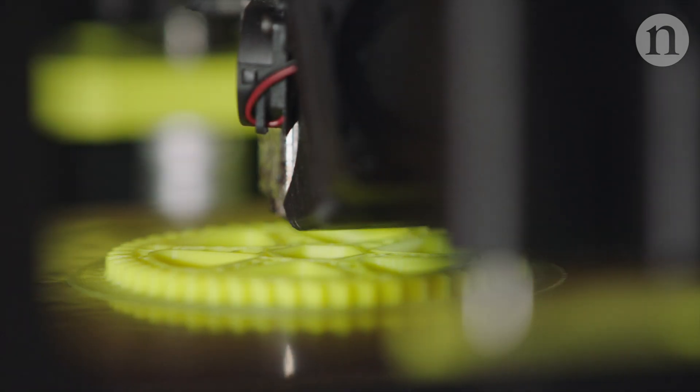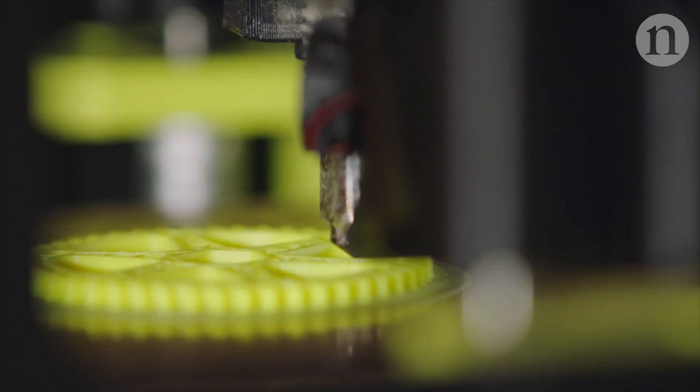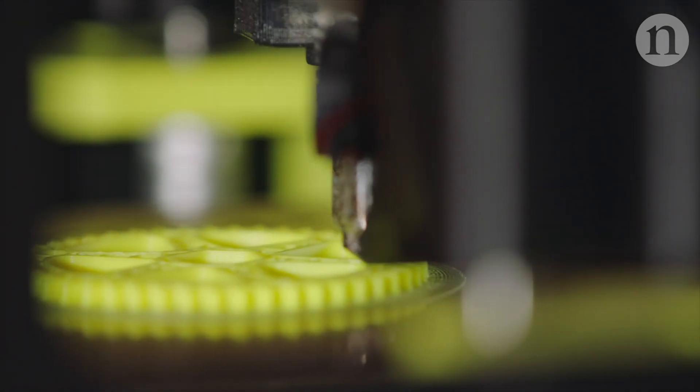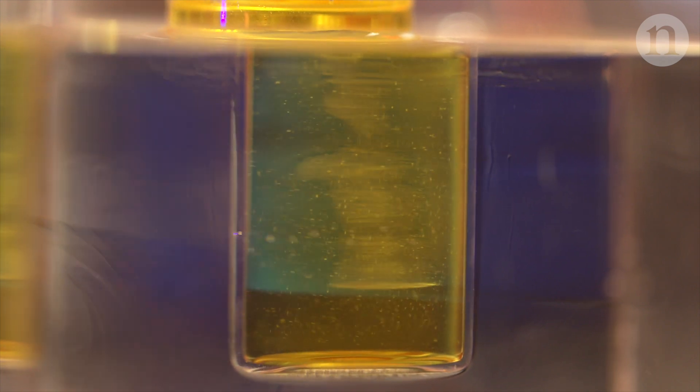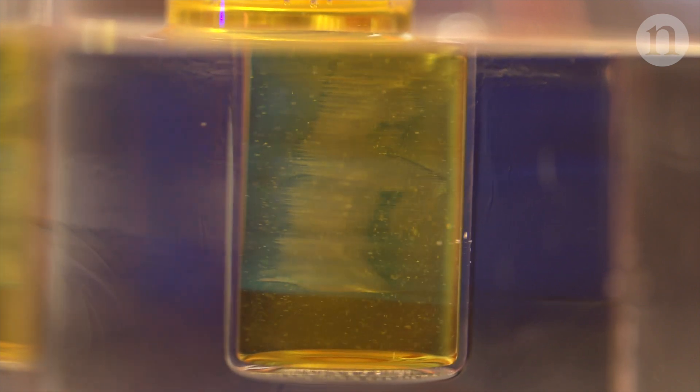Conventional 3D printers deposit material layer by layer, gradually building up the structure. But this new approach, developed by researchers in California, materializes entire objects at once.